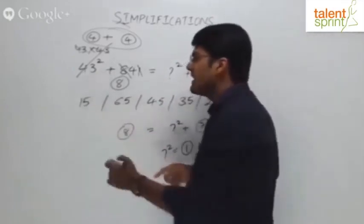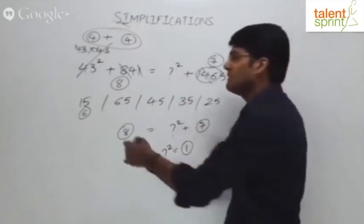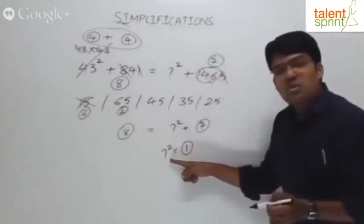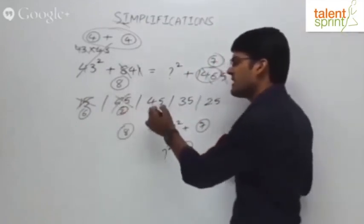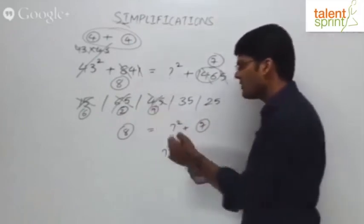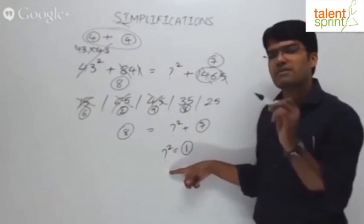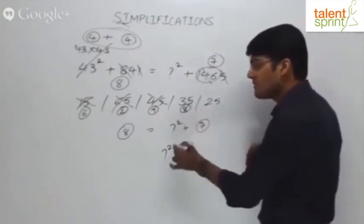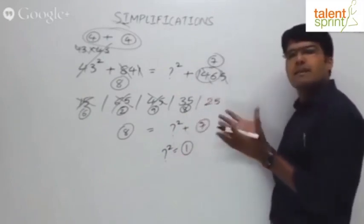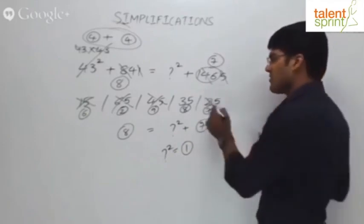Check the options. For 15: root-digit 6, 6 squared is 36, root-digit 9 — doesn't balance. For 65: root-digit 2, 2 squared is 4 — doesn't balance. For 45: root-digit 9, 9 squared is 81, root-digit 9 — ruled out. For 35: root-digit 8, 8 squared is 64, 6 plus 4 is 10, root-digit 1 — this balances! For 25: root-digit 7, 7 squared is 49, root-digit 4 — doesn't balance. So the correct answer is 35.